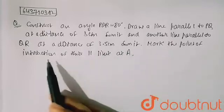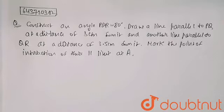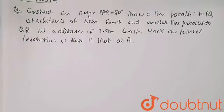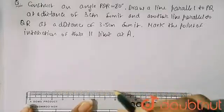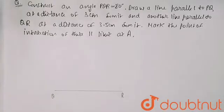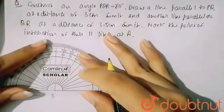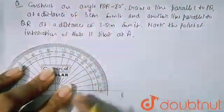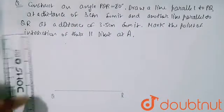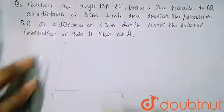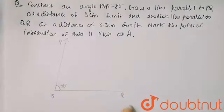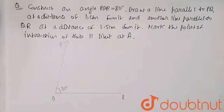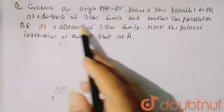Mark the point of intersection of these parallel lines as A. So here, first I will construct angle PQR. This is my QR of any measurement you can take. Now from here, you can see that 80 degrees — a straight line will be passing through it. This is my angle of 80 degrees, and you can take this point as P. So angle PQR is 80 degrees.